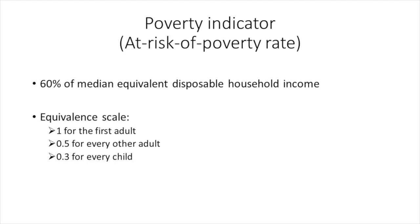This poverty threshold was set at 60% of median equivalent disposable household income, with an equivalence scale of 1 for the first adult, 0.5 for every following adult in the household, and 0.3 for every child in the household below the age of 14. This indicator, thus defined, has been called the at-risk of poverty rate.